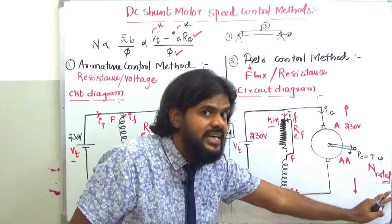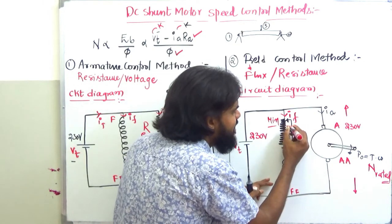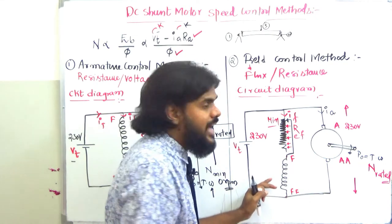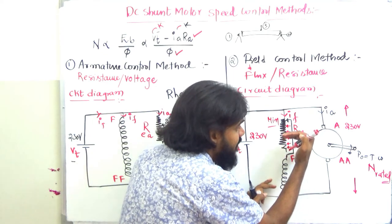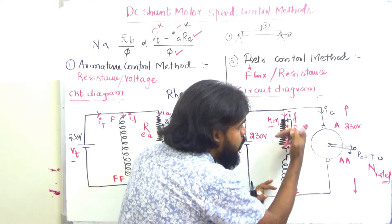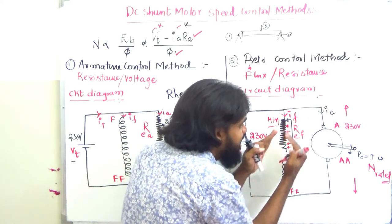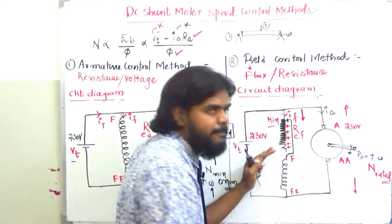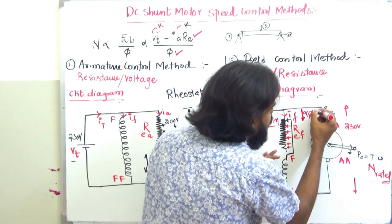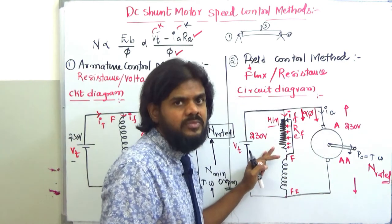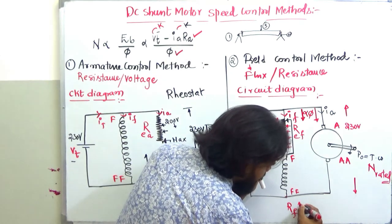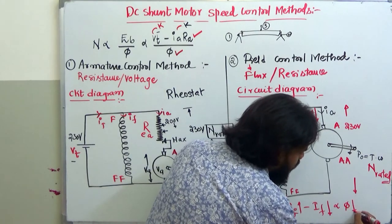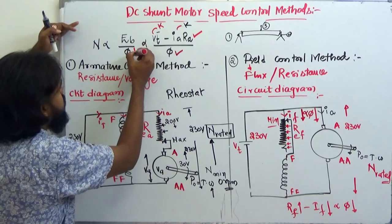Now, as you slowly increase the resistance of the external field rheostat connected in series with the field winding, you increase the net resistance of the field circuit. This causes the field current If to decrease, and because If is down, the flux φ also goes down.